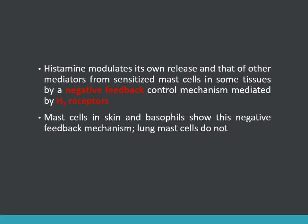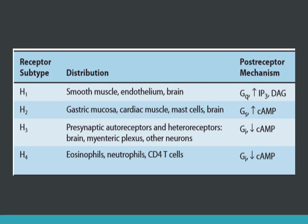Histamine modulates its own release and that of other mediators from sensitized mast cells by a negative feedback control mechanism mediated by H2 receptors. Mast cells in the skin and basophils show this negative feedback mechanism, but the lung mast cells do not. There are four types of histamine receptors and all of them are G-protein coupled receptors. Our main concern is with H1 and H2 receptors, as we will study antihistamines that block these receptors. H3 and H4 have no clinical use — you just need to know their location.